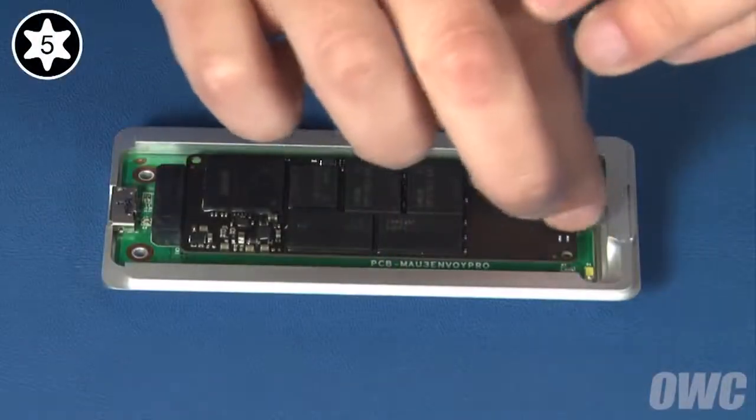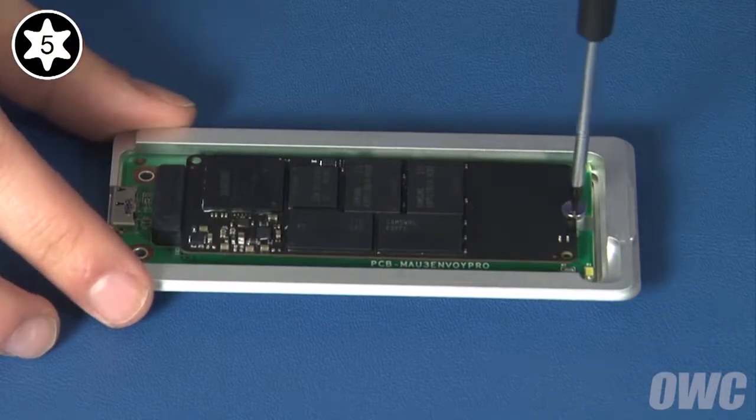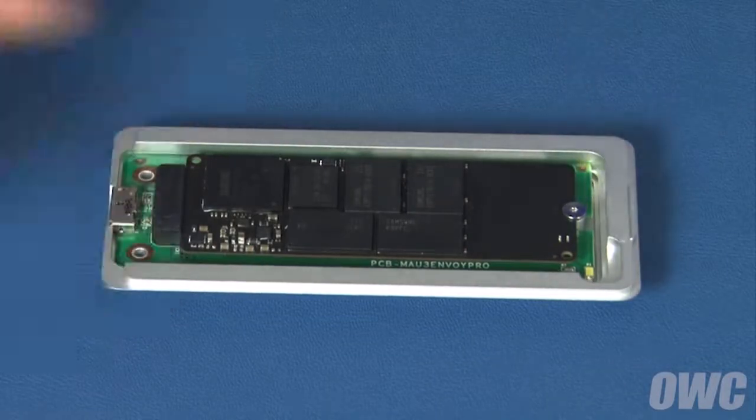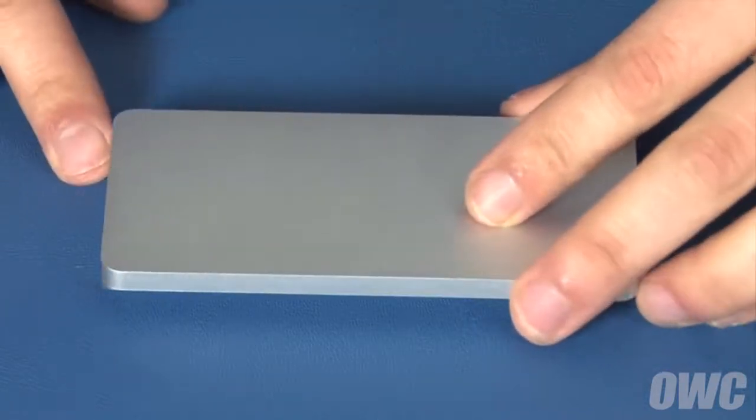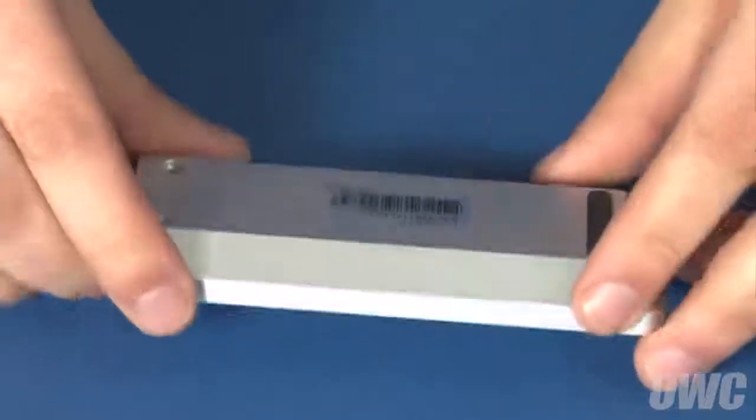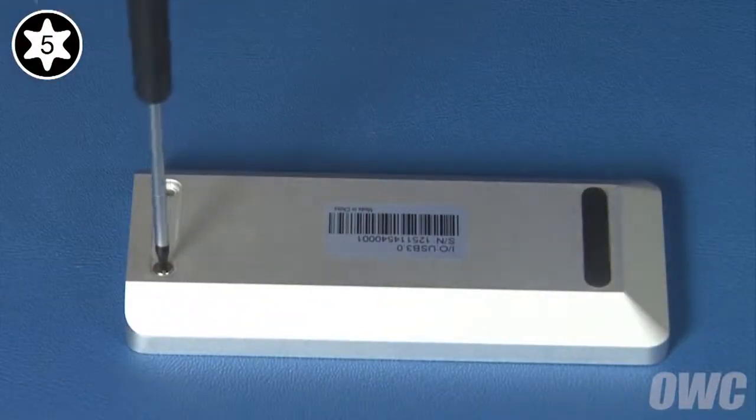You can then anchor the SSD module in place with a small Torx T5 screw. Place the top half over the bottom, offset away from the USB port, then slide it so all edges are flush. You can now flip the Envoy Pro over and replace the two Torx T5 screws in the bottom.